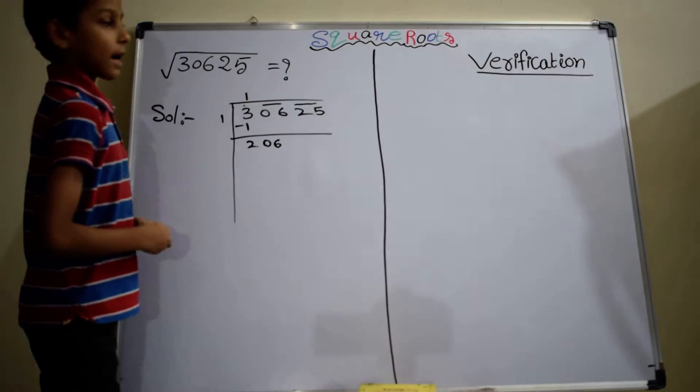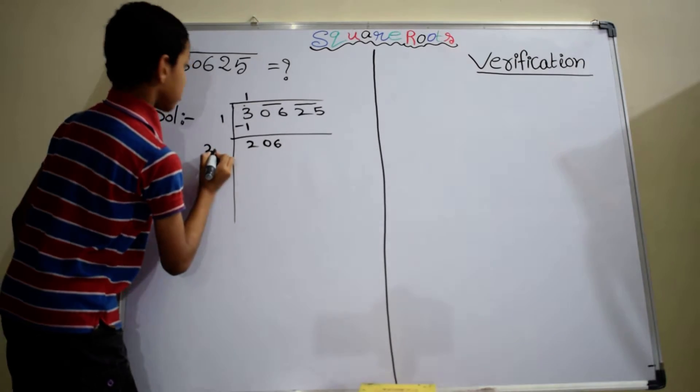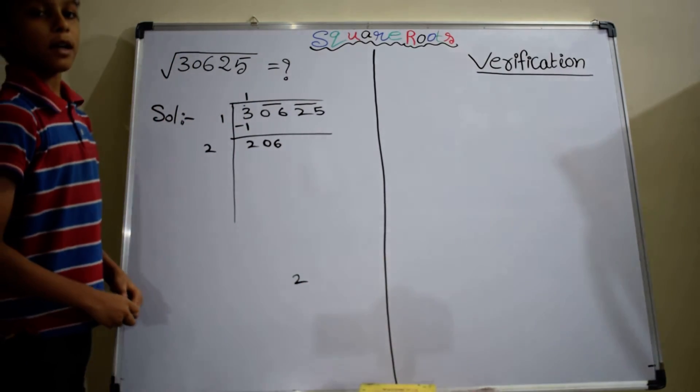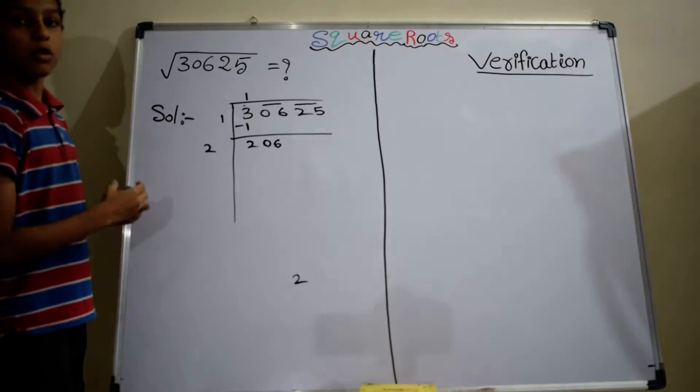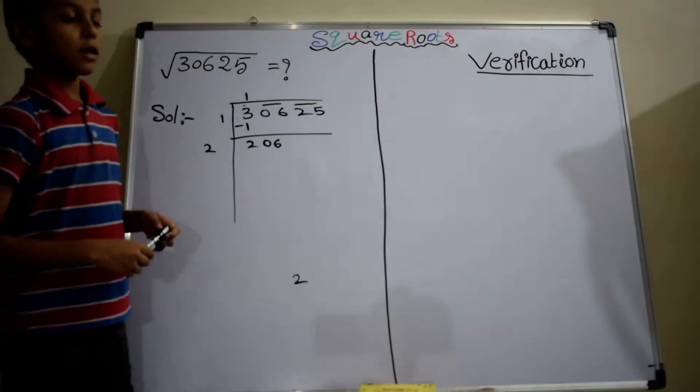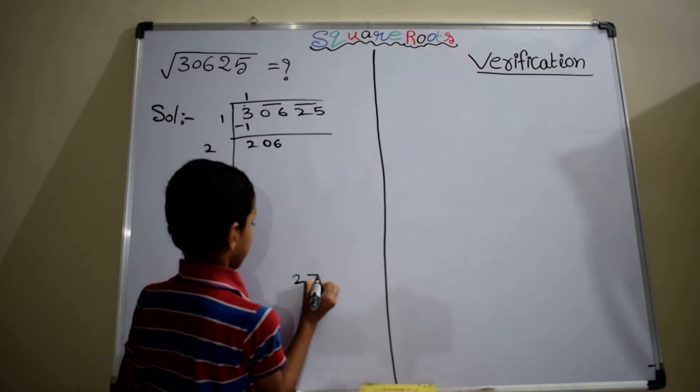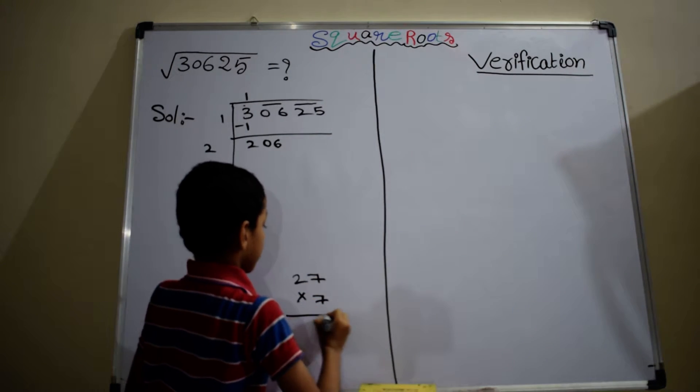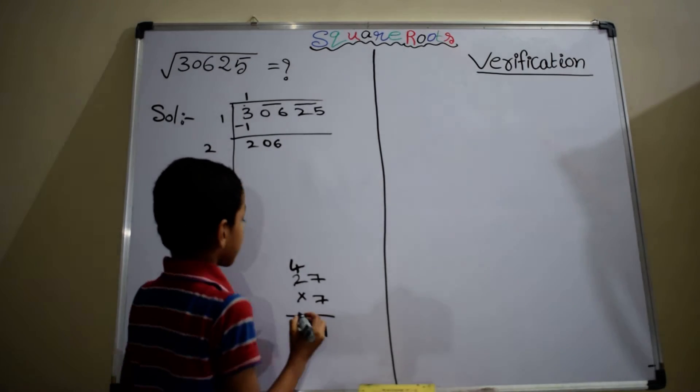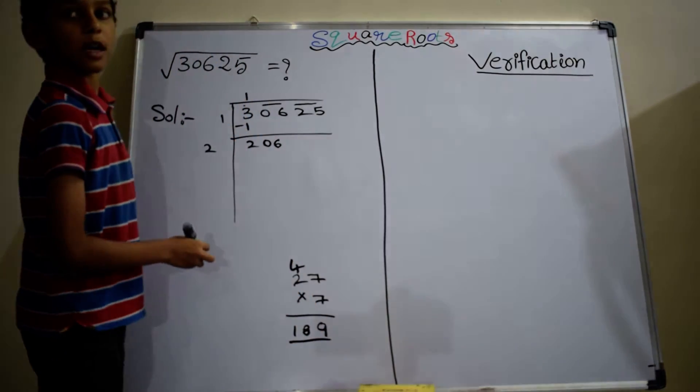In this step, write the double of the quotient and write it here. The double of the quotient is 2. Here we have to take number besides 2. When you multiply with the number, you have to get the nearby number 206. Approximately, I am taking 7. 7 into 7 is 49. 2 into 7 is 14, 14 plus 4 is 18. It is nearby 206.